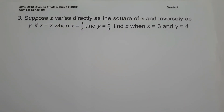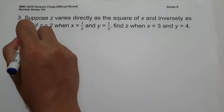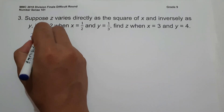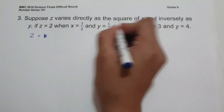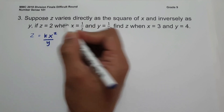On number 3: suppose Z varies directly as the square of X and inversely as Y. If Z equals 2 when X equals 1/2 and Y equals 1/3, find Z when X is 3 and Y is 4. The equation is Z = K × X² / Y.